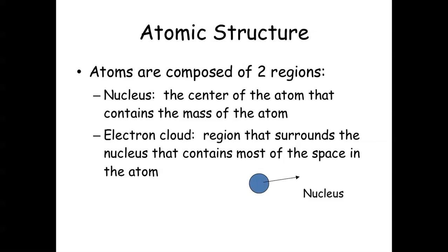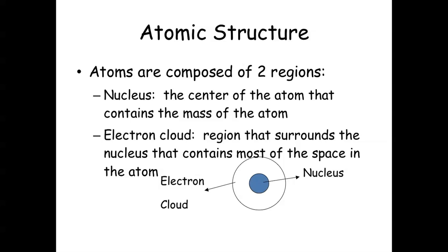So there's your nucleus, and then your electron cloud — and that's not to scale, because like I just said, if the nucleus was a dime, the electron cloud is the size of Cary.